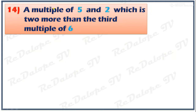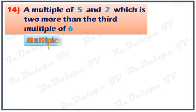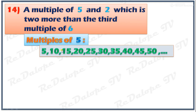A multiple of 5 and 2 which is 2 more than the third multiple of 6. We will list down all the multiples of 5, 2, and 6 respectively. The multiples of 5 are: 5, 10, 15, 20, 25, 30, 35, 40, 45, 50, and so on.